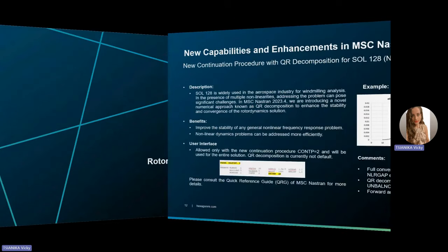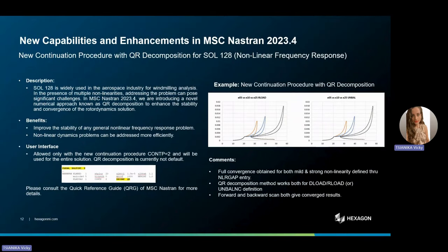Moving on to the area of rotor dynamics. In the aerospace industry, solution 128 is commonly employed for wind milling analysis, especially when dealing with multiple non-linearities, which can be quite challenging. In MSC Nastran 2023.4, we're introducing a new numerical method called QR decomposition to make the rotor dynamic solution more stable and convergent. This means we're enhancing the stability of any general non-linear frequency response problem, making it more efficient to address non-linear dynamic challenges. For more information on this functionality, you can visit the release notes as well as the Quick Reference Guide of MSC Nastran.